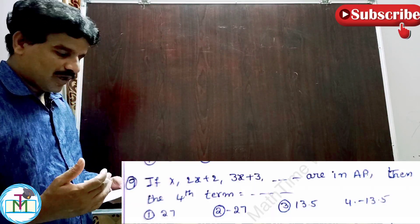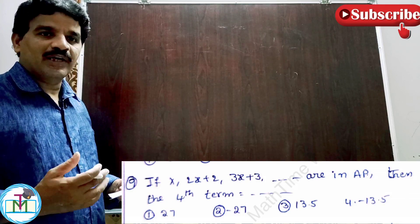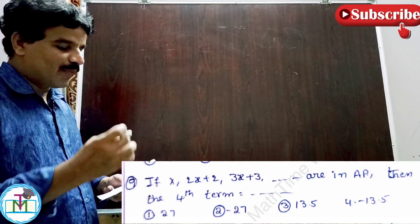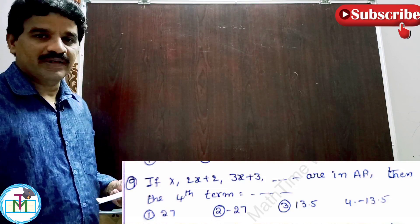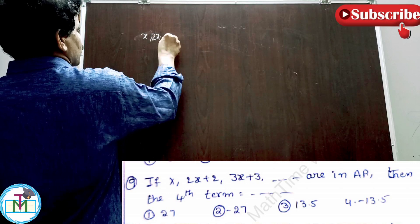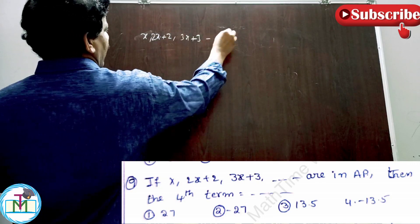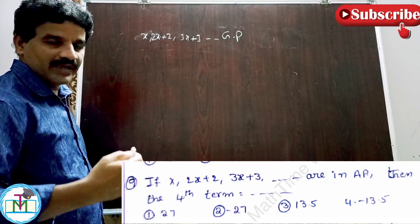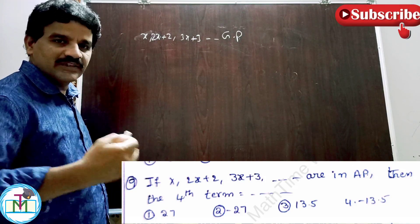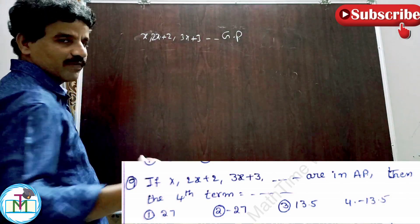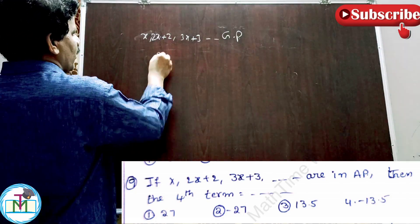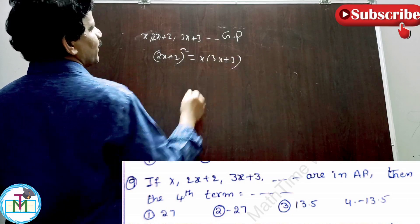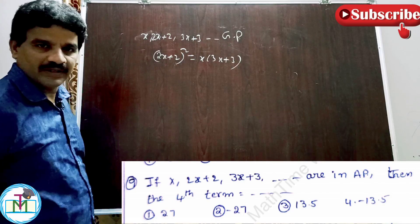Question number 9: if x, 2x plus 2, 3x plus 3 are in geometric progression (note: typing mistake in the question — it is GP, not AP), then the fourth term is what? Since A, B, C in GP means B² equals AC. Here A equals x, B equals 2x plus 2, C equals 3x plus 3. So (2x+2)² equals x(3x+3). Taking 2 common from the left: 4(x+1)² equals x into 3(x+1).